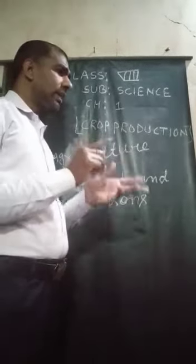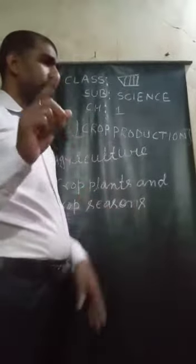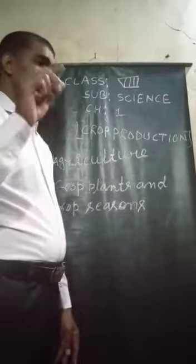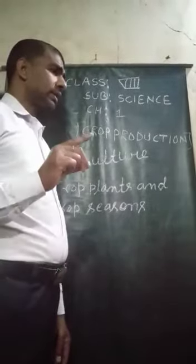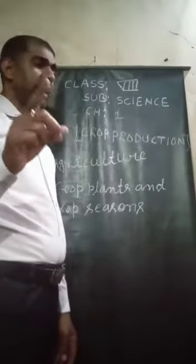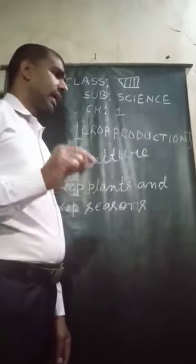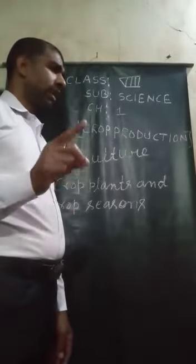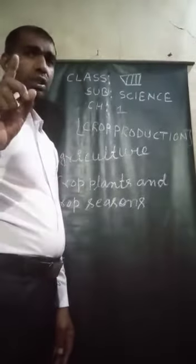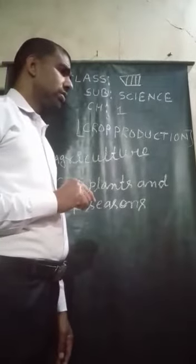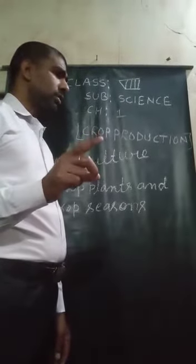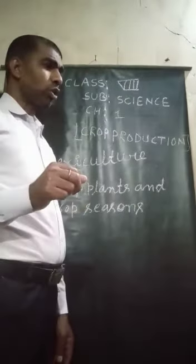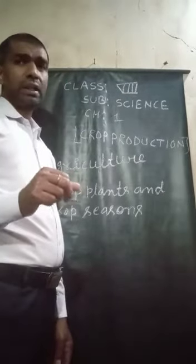In cereals: rice, wheat, maize, and barley. Pulses: gram, pea, and bean. Oilseeds: mustard, groundnuts, and soya bean. Fiber crops: cotton and jute. Root crops: sweet potato and carrot. Tuber crops: potato and tapioca.